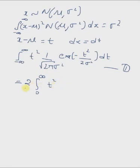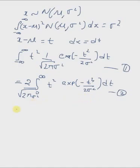∞ of t². We can take the constant 1/√(2π·σ²) outside. The function inside the integral is t² times exp(-t²/(2σ²)) dt. This is expression 2. Now, from